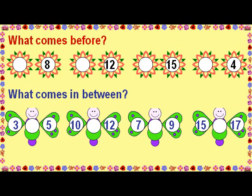7 comes before 8. 11 comes before 12. 14 comes before 15. 3 comes before 4. What comes in between? 4 comes in between 3 and 5. 11 comes in between 10 and 12. 8 comes in between 7 and 9. 16 comes in between 15 and 17.